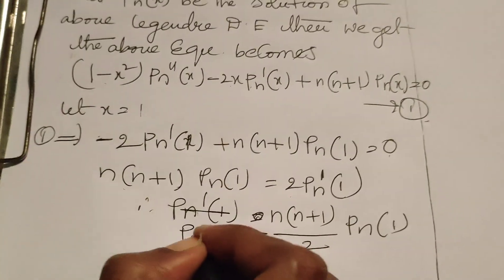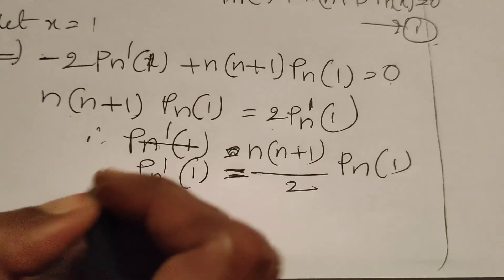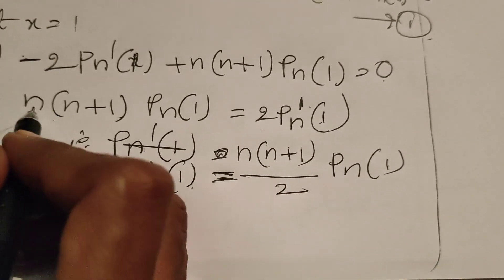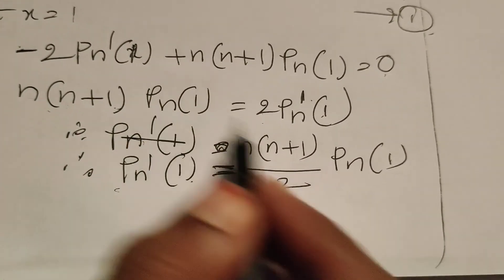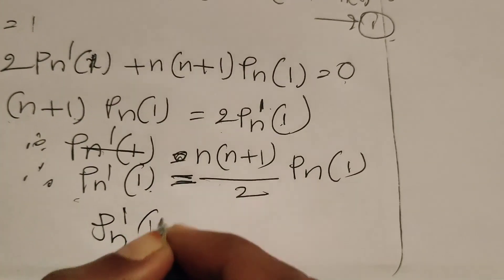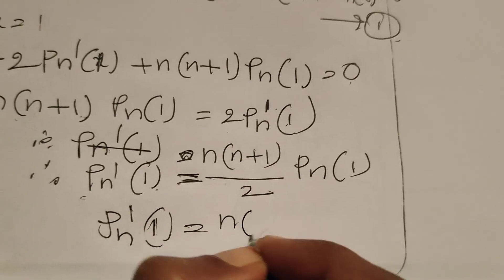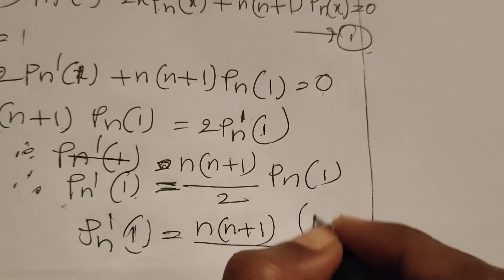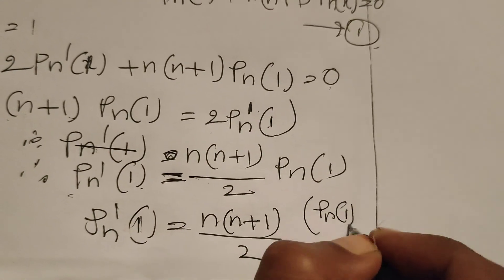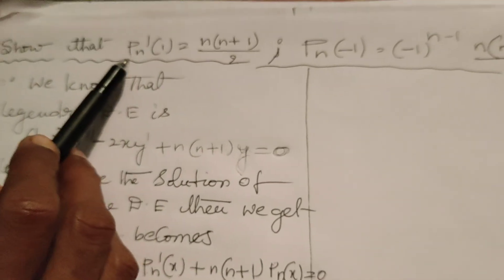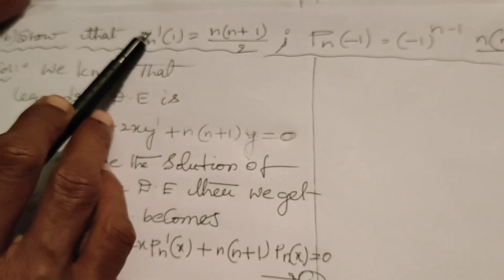Since Pn(1) = 1, we therefore get P'n(1) = n(n+1)/2 · Pn(1) = n(n+1)/2. Hence we have proved the first result: P'n(1) = n(n+1)/2.